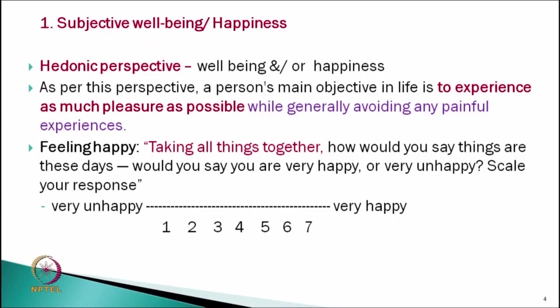For example, if someone scores 2 on this scale, we say their happiness level is low. On the other hand, if a person scores 6 or 7 by considering all things in their life, we say they are very happy. In this case, we are not taking into account different domains — not asking about family, occupation, or study — but rather the overall view of one's life and what level of happiness that reflects.